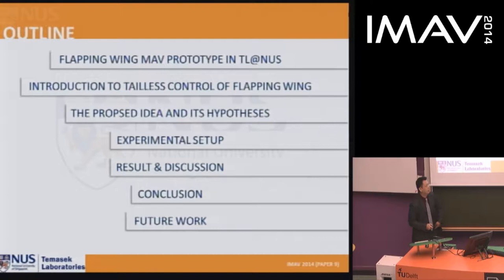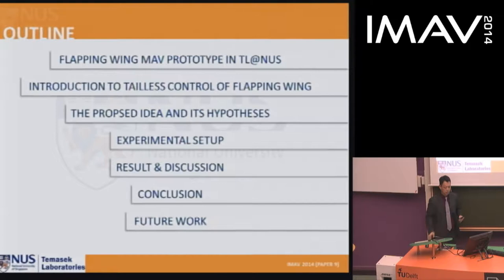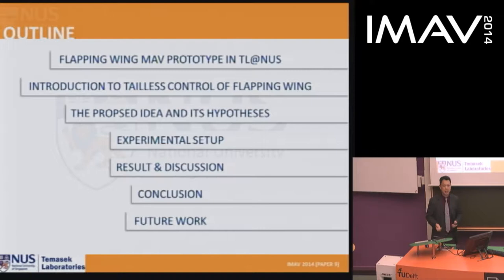The presentation outline covers: first, a brief introduction to the flapping wing MAV platform they have developed; second, a simple introduction to tail-less control of flapping wing MAVs and the proposed idea and hypothesis; third, the experimental setup to test the idea and results with discussion; and finally, a conclusion.